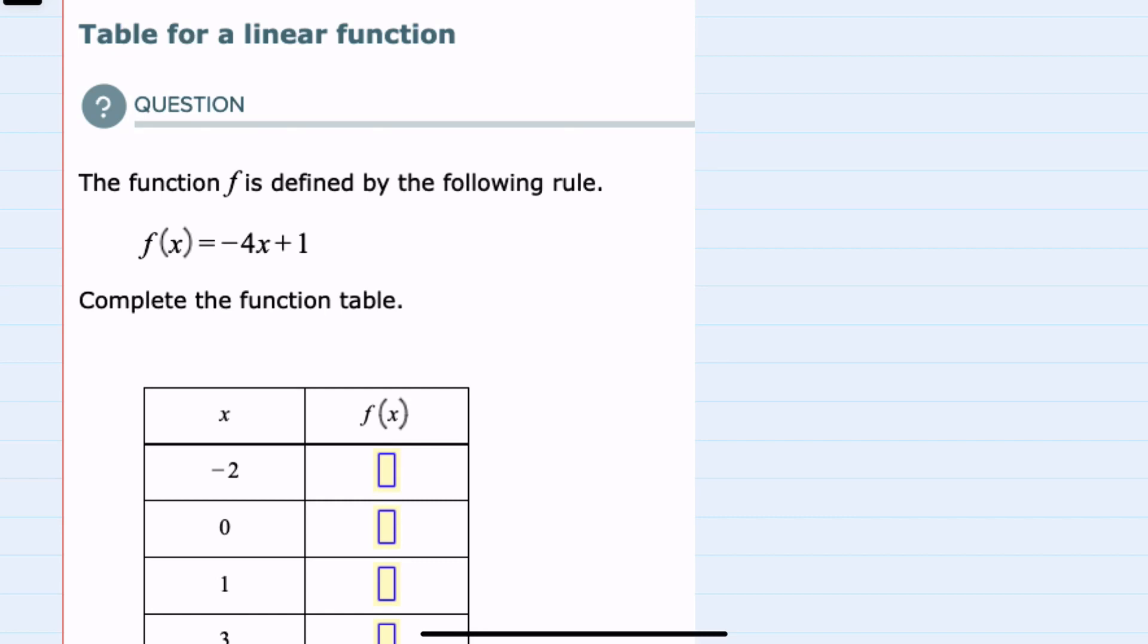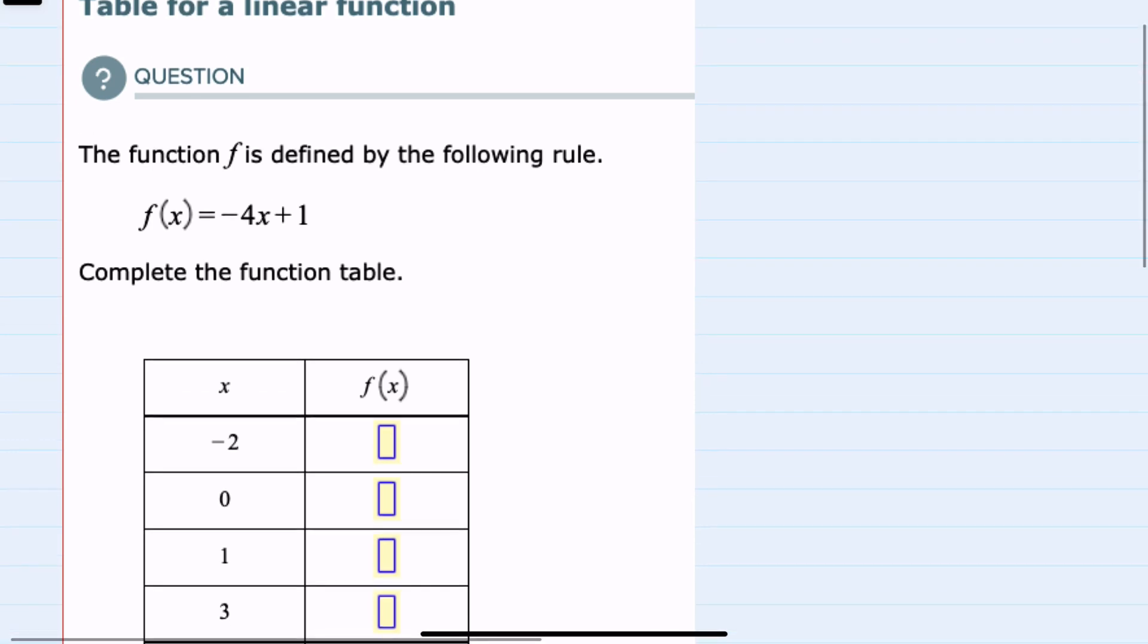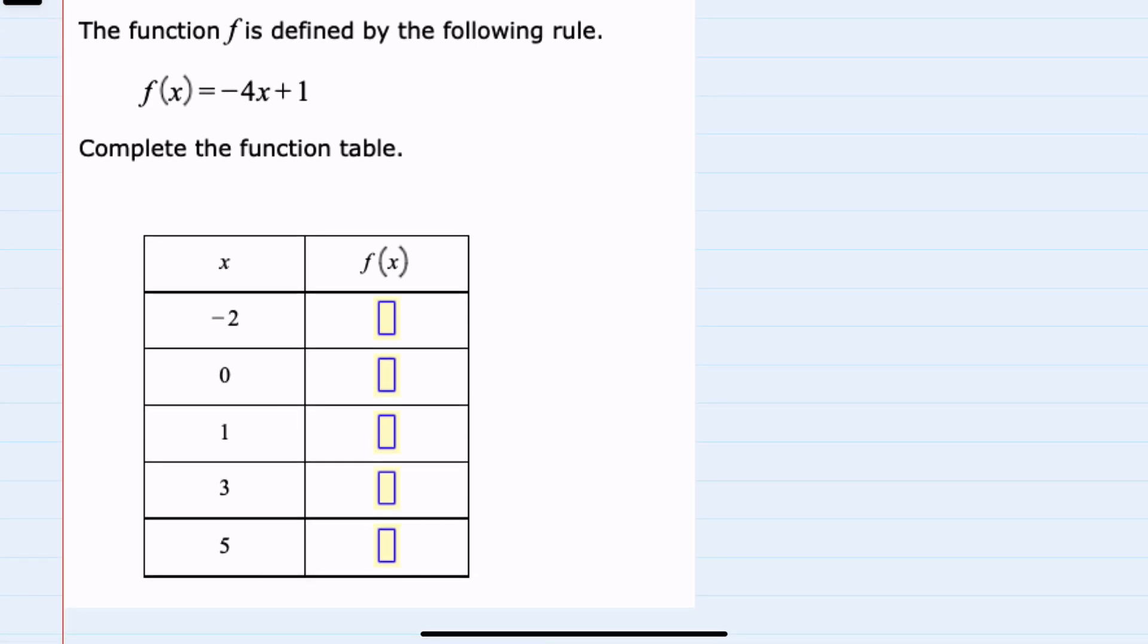In this video I'll be helping you with the ALEKS problem type called table for a linear function. We're given the linear function f(x) = -4x + 1 and asked to complete this table where we're given x values and we are to calculate the f(x) values.